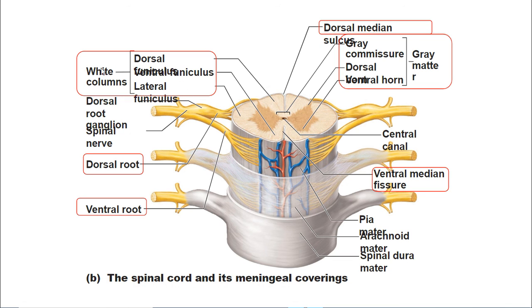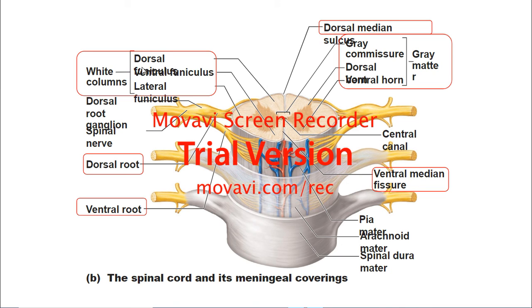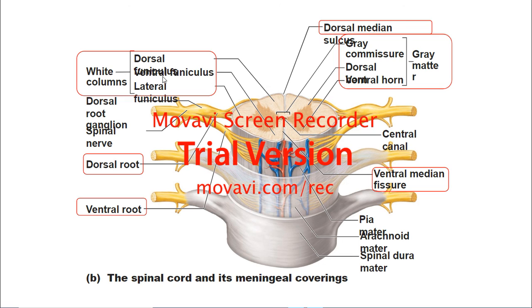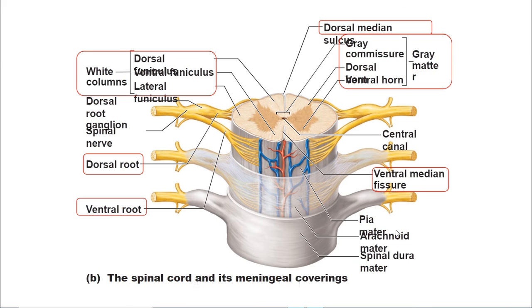The white columns are just the white matter of the spinal cord. You have the lateral white column and the posterior white column. And that's the end of the lecture — thank you.